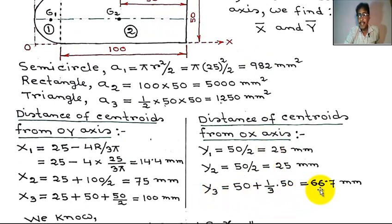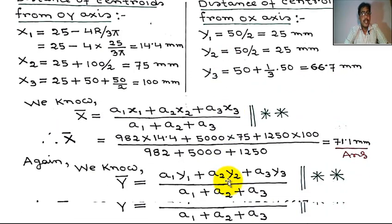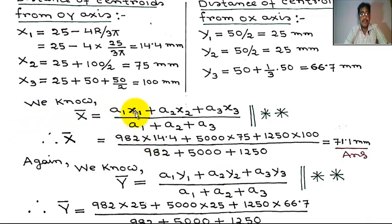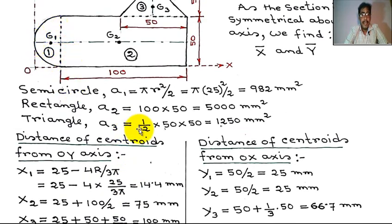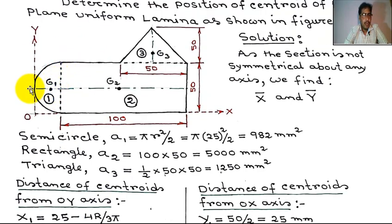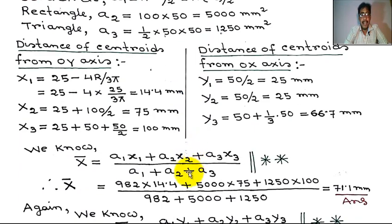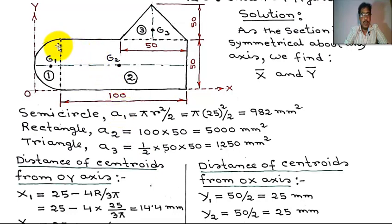Now we know x̄ equals (A1·x1 + A2·x2 + A3·x3) divided by (A1 + A2 + A3), where A1·x1 is the area of the semicircle times the distance of its centroid from the Y axis, A2·x2 is the area of rectangle 2 times the distance of its centroid from the Y axis.